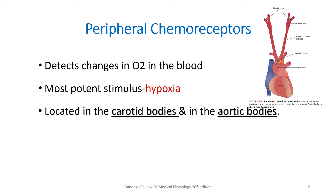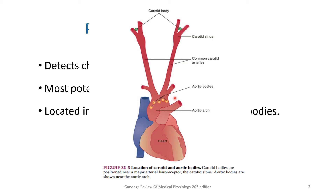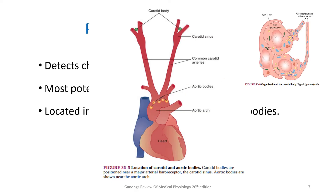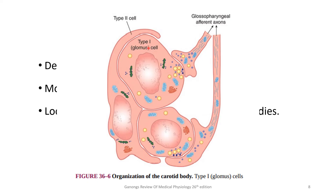The aortic bodies are located at the aortic arch, and the carotid bodies are at the bifurcation of the carotids — these are our peripheral chemoreceptors. These bodies contain two types of cells called glomus cells: type 1 and type 2. Type 2 glomus cells have more of a supportive function. The carotid and aortic bodies synapse with nerve terminals — the vagus and the glossopharyngeal nerves — thereby stimulating these nerve endings.